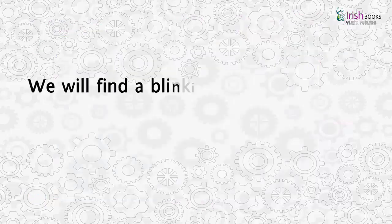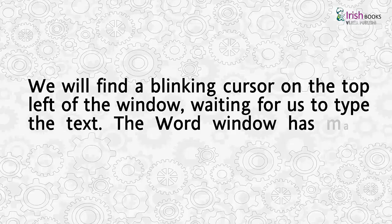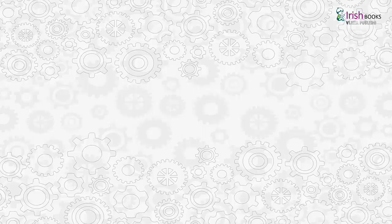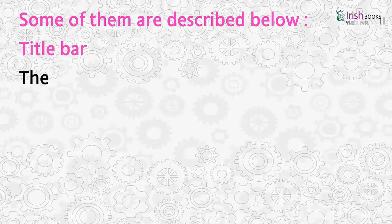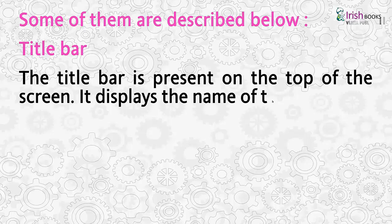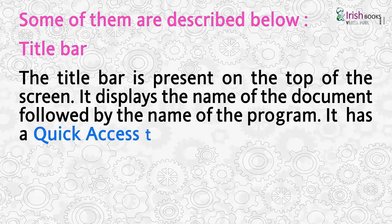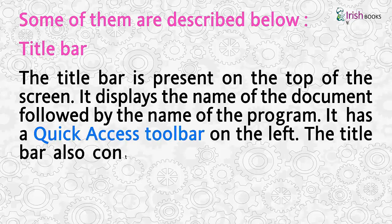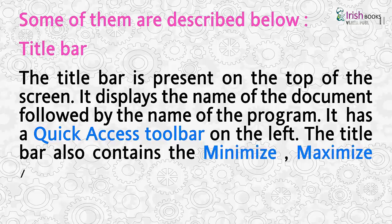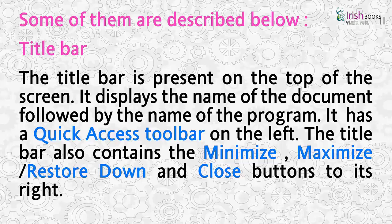We will find the blinking cursor on the top left of the window, waiting for us to type the text. The word window has many parts. Some of them are described below. Title Bar: The title bar is present on the top of the screen. It displays the name of the document followed by the name of the program. It has a Quick Access Toolbar on the left. The title bar also contains the Minimize, Maximize, Restore Down and Close buttons to its right.